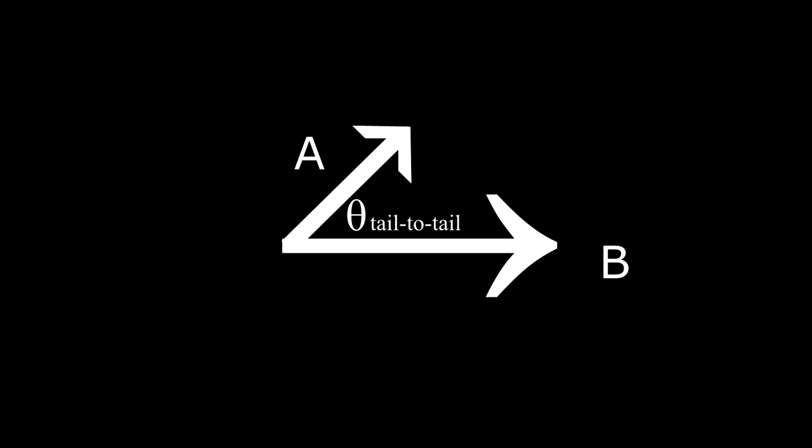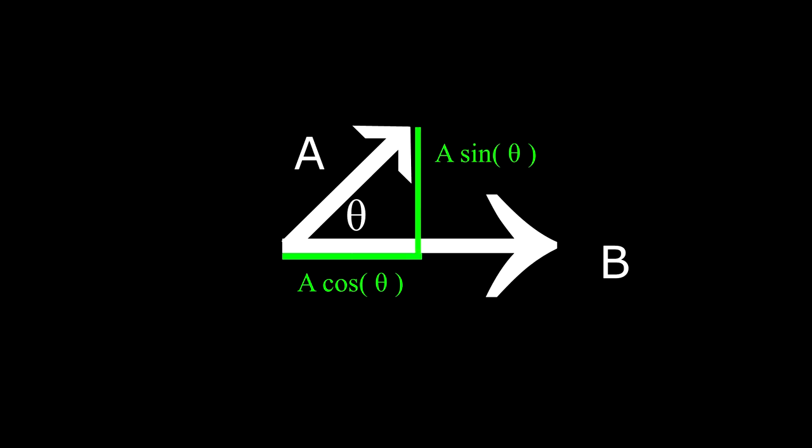The portion A cosine theta is the part of vector A that lies along vector B. This is often said to be the portion of A that is parallel to B. And A sine theta is the portion of vector A that is perpendicular to vector B.